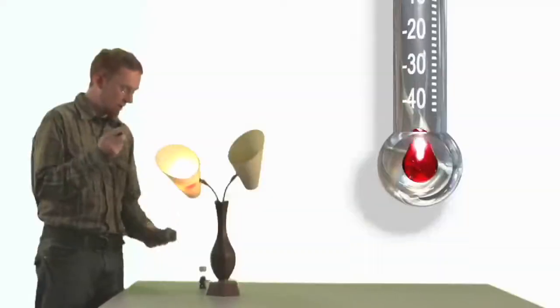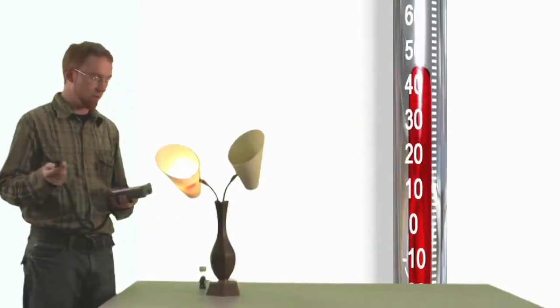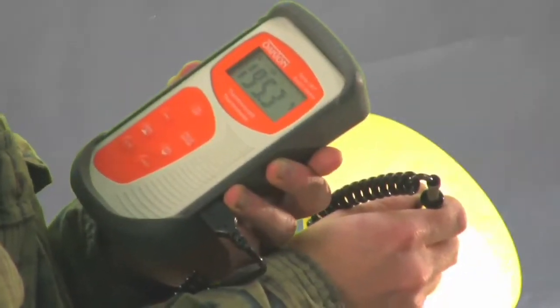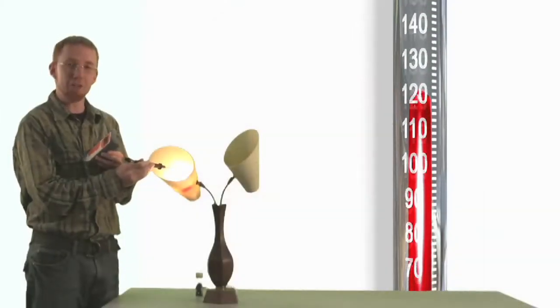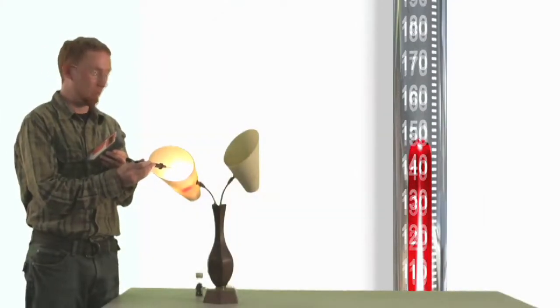So I have a thermometer here. The temperature of the room is 74 degrees Fahrenheit. The temperature of this light bulb is close to 200 degrees Fahrenheit. That's over a hundred degrees warmer than the room temperature.